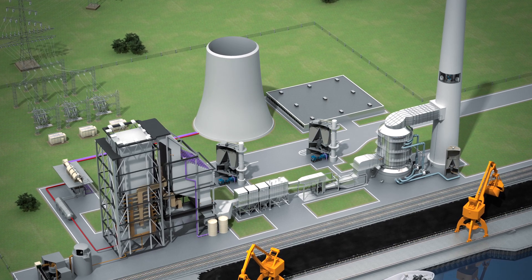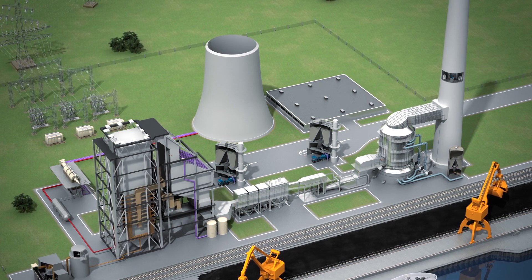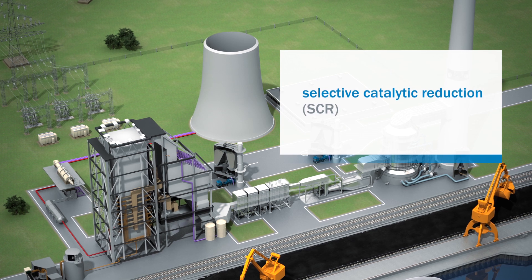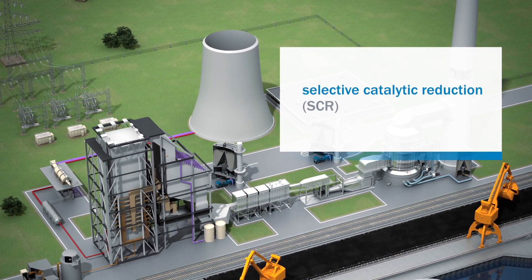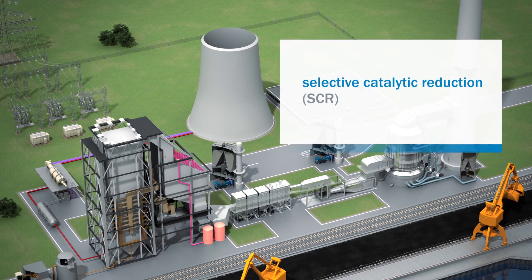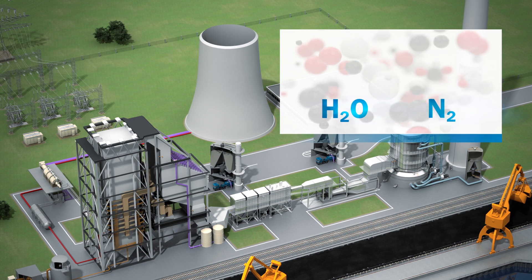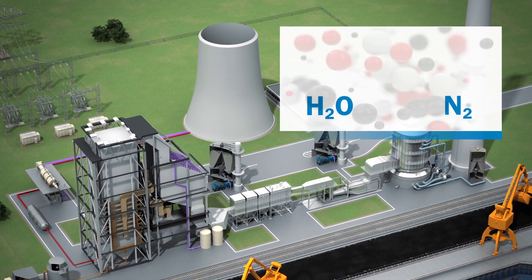Efficient flue gas cleaning is used in modern power stations. A secondary method used to reduce NOx is the Selective Catalytic Reduction or SCR process. It uses ammonia for conversion of NOx to nitrogen and water. The chemical reaction is accelerated using a catalyst bed.